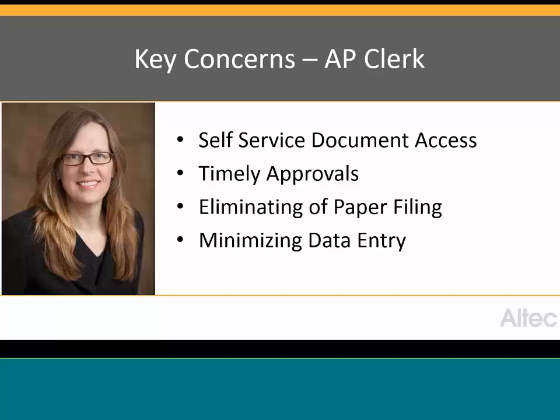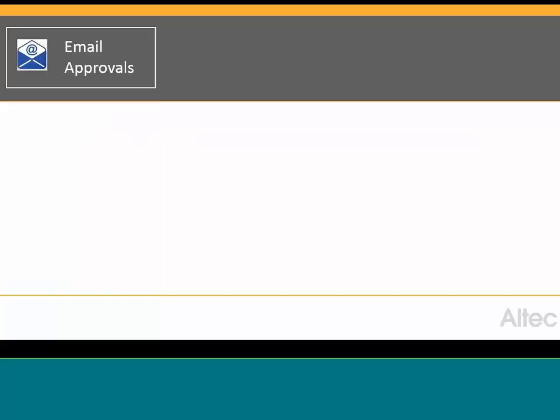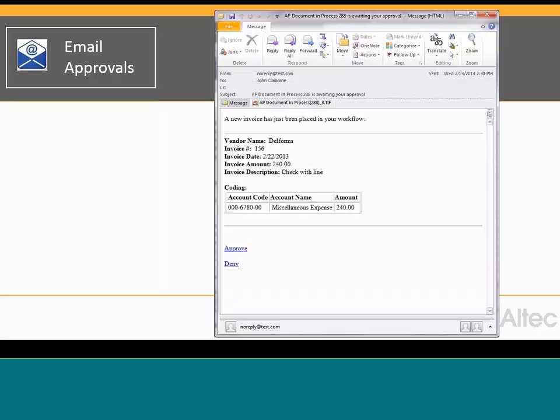We can resolve all of that. When an invoice is received, it gets stored into DocLink. The approver will get notified. Your question is: how will the approvers or staff know that there are invoices waiting for their approval or action? One way is we send out email notification. The email notification is sent out for each document or invoice, and all you need is access to your email. You don't need to have software loaded. You're not tied to the office.